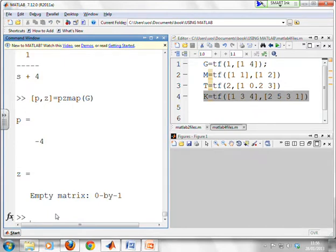It comes back with a pole at minus four. That's what I expected. And there's no zeros.